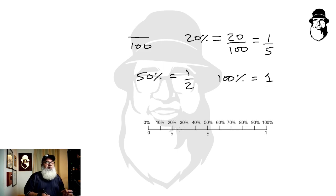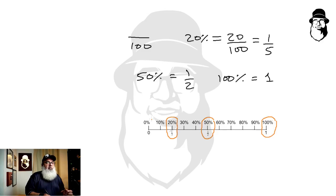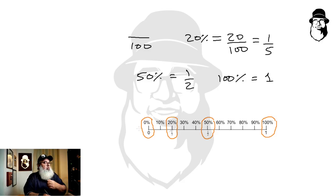The percentages written above, we can see them here. This one is hundred percent, and fifty percent is one half, twenty percent is one fifth, and zero percent is zero. It is therefore very easy to convert percentages to fractions.